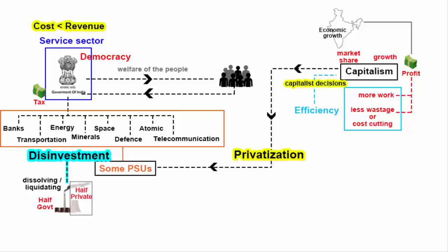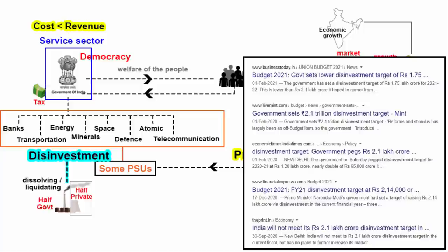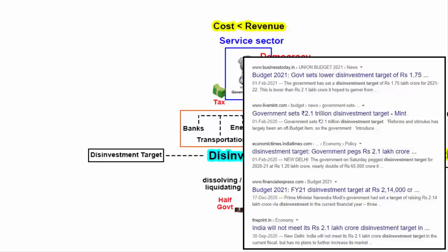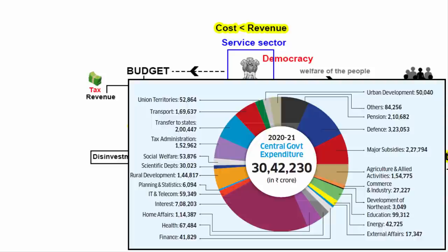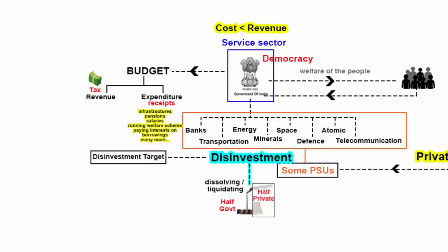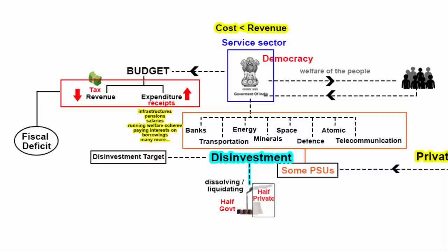You must have heard the headline that the disinvestment target has reached a certain amount. The Government of India sets a target for how much worth of assets need to be sold by a certain time. Whenever the government plans a budget, there are revenues from taxes and expenditures for infrastructure, pensions, salaries, welfare schemes and interest on borrowings. This creates a cash flow shortage — revenue is not enough to support expenditure — which is called fiscal deficit. To fill that shortage, the government sells some of its properties, and by selling government companies it is also reducing its expenditure.